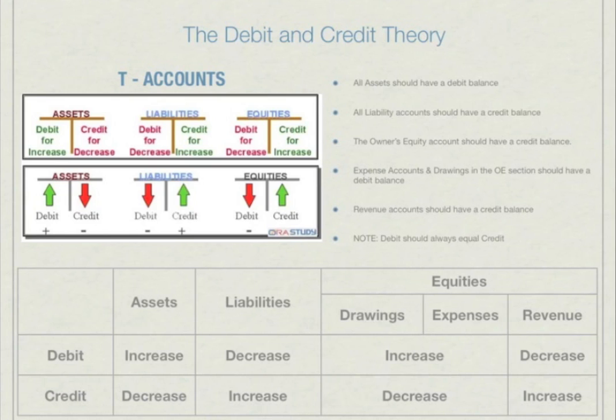An increase in an account in the asset section will be recorded on the debit side, while a decrease will be recorded on the credit side. In the liabilities accounts, an increase in value is a credit, while a decrease is recorded on the debit side. For equities, an increase goes on the credit side, while a decrease goes on the debit side.